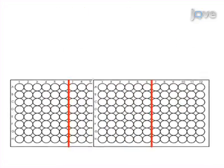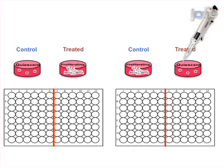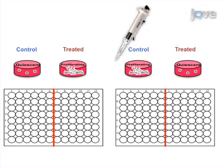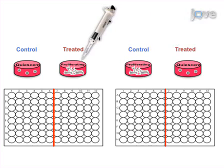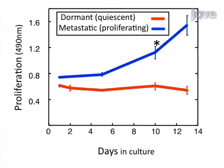The proliferative behavior of the dormant and metastatic cells as a result of treatment will be scored by adding CellTiter 96 Aqueous One Solution cell proliferation assay kit at the desired time points, for analysis by an ELISA plate reader. Results are obtained that show the effect of treatment on cell proliferation of either dormant or metastatic tumor cells based on the cell proliferation assay in the 3D system.